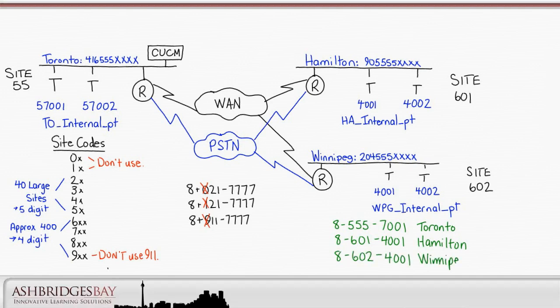Our numbering plan is in place. We've developed an internal dial plan where we use 8 as an access code, plus a site code, plus the local extension for the site. We chose site code 55 for Toronto, 601 for Hamilton, and 602 for Winnipeg. Let's implement this using partitions, calling search spaces, and translation patterns.